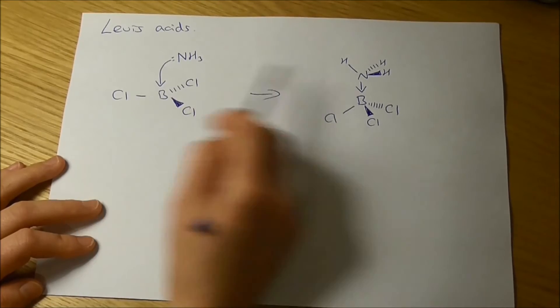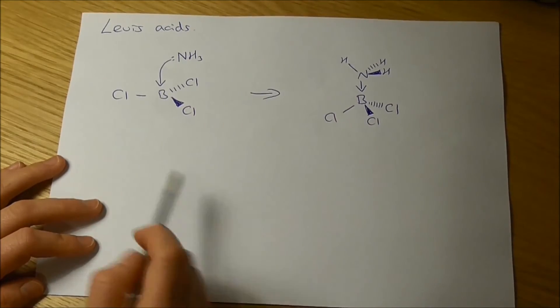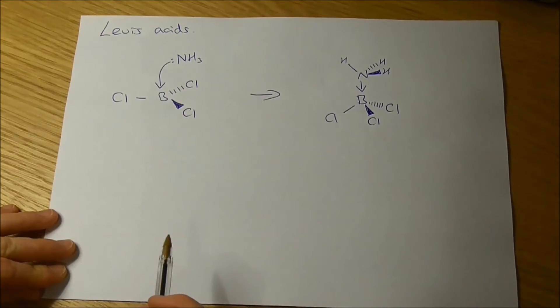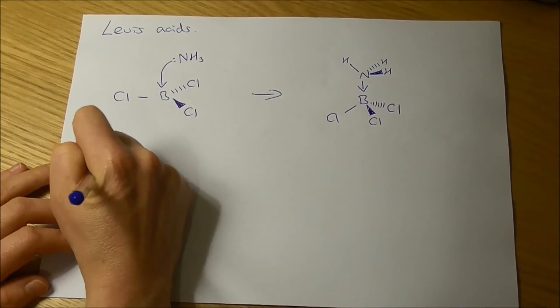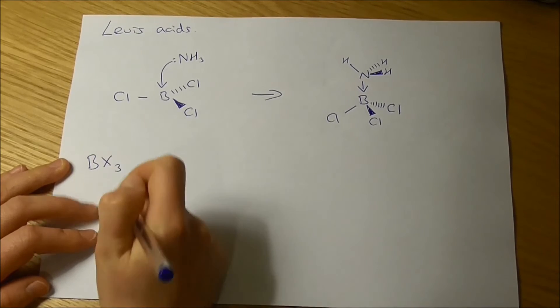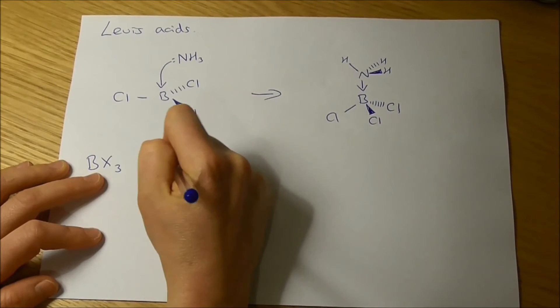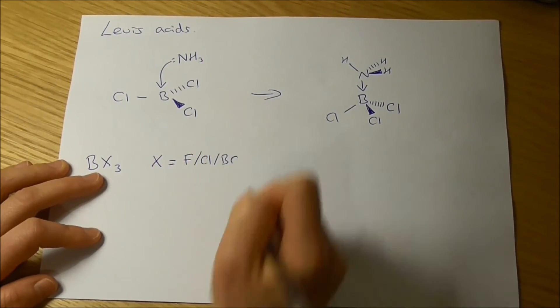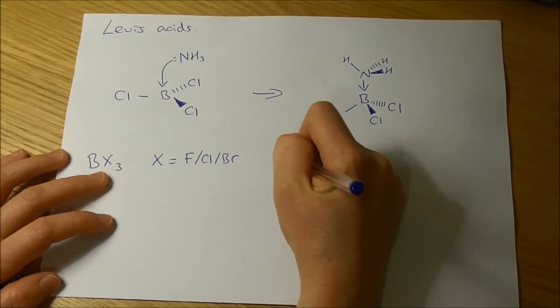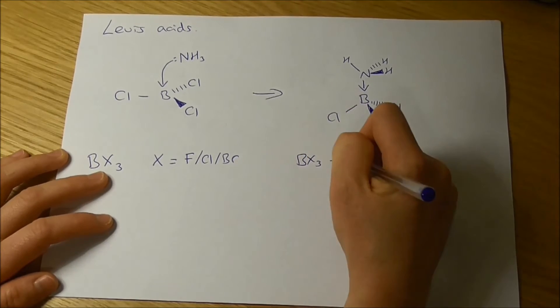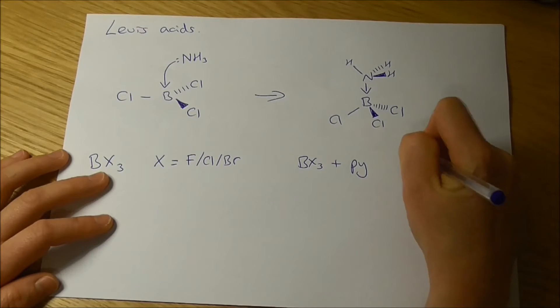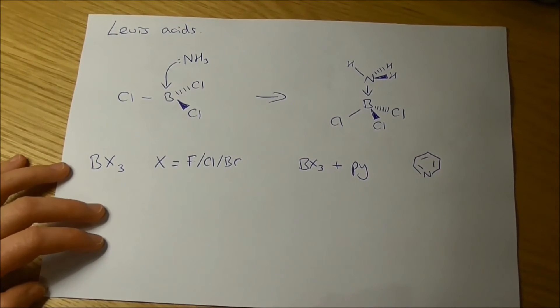Now, the energetics of what can go on here tells us quite a lot about the bonding in these boron trihalides. So if we consider boron trihalide as BX3, where X is equal to fluorine, chlorine, or bromine. And then if we consider the reaction of BX3 with an amine, we're going to look at pyridine, where pyridine is this structure here, so an aromatic amine.